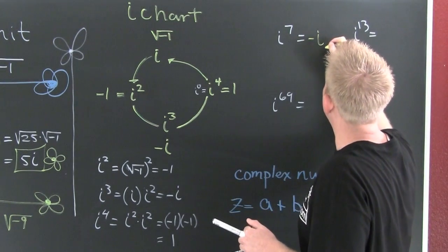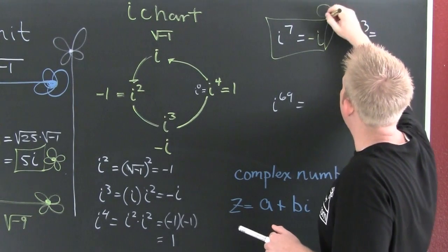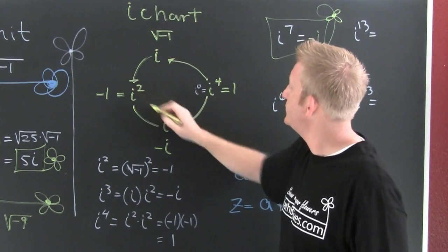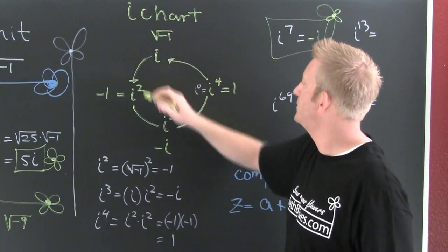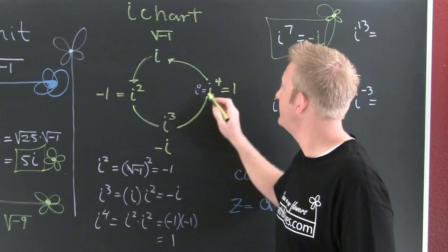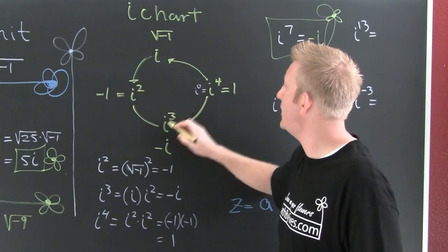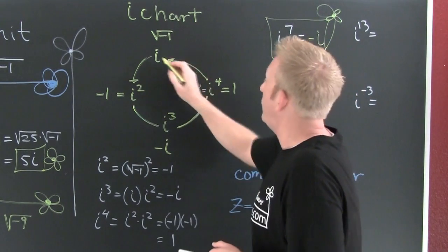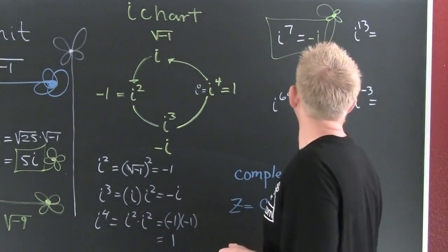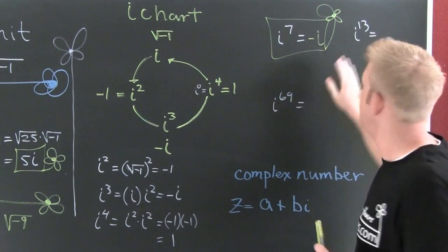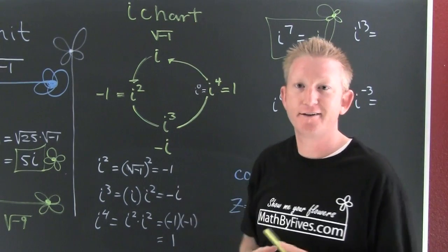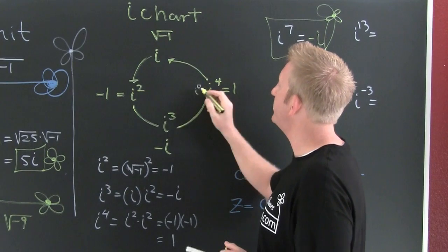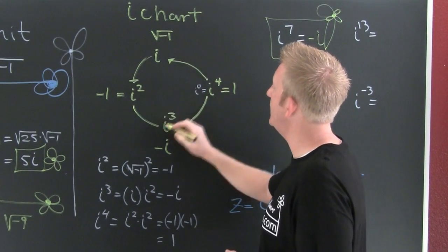What about i to the thirteenth? Let's take a look at i to the thirteenth on our i chart. We can go around 1, 2, 3, 4, 5, 6, 7, 8, 9, 10, 11, 12, 13. This is going to be i.